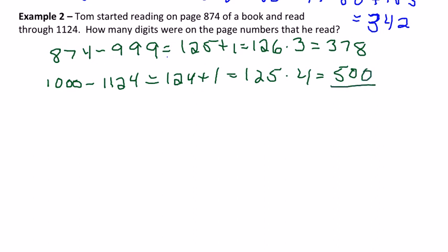And so the total number of digits of the pages Tom read is just 878. So 878 digits Tom read from page 874 to 1,124.